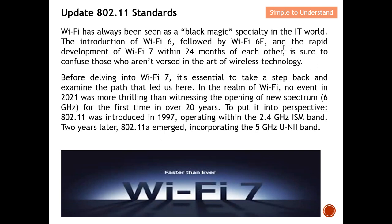The introduction of Wi-Fi 6, followed by Wi-Fi 6E, and the rapid development of Wi-Fi 7 — all within 24 months of each other — is sure to confuse those who aren't well-versed in wireless technology. Typically, different eras of Wi-Fi standards take a few years apart, but Wi-Fi 6, Wi-Fi 6E, and Wi-Fi 7 all surfaced within just 24 months of each other. You can imagine how fast this technology is moving.